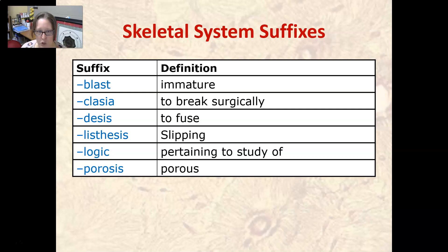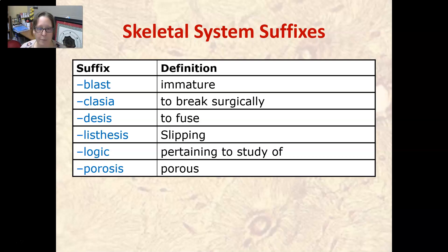Now for suffixes. Blast means immature — an osteoblast is an immature bone cell that creates new bone. Clasia means to break surgically, sometimes necessary to reset a bone. Desis means to fuse, as in fusing bones or vertebrae together. Listhesis means slipping, as in a vertebra slipping. Logic means pertaining to the study of, as in a particular field. Porosis means porous — think osteoporosis, the weakening of bones as they become more porous.